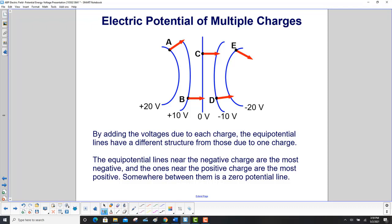The equipotential lines near the negative charge are the most negative, and the ones near the positive charge are the most positive. Somewhere between them is the zero potential line.